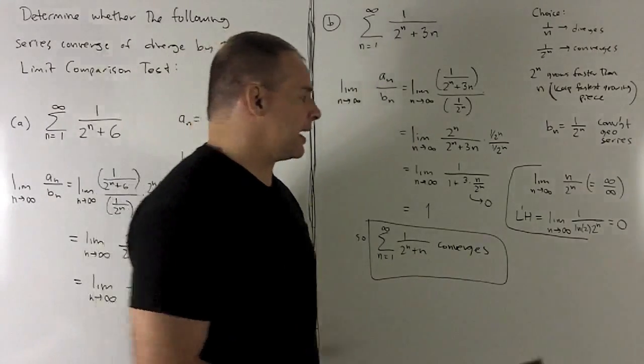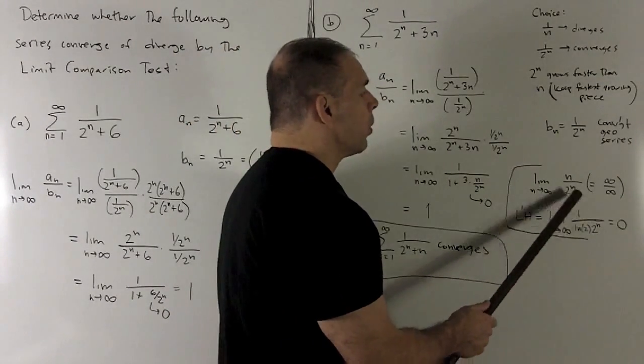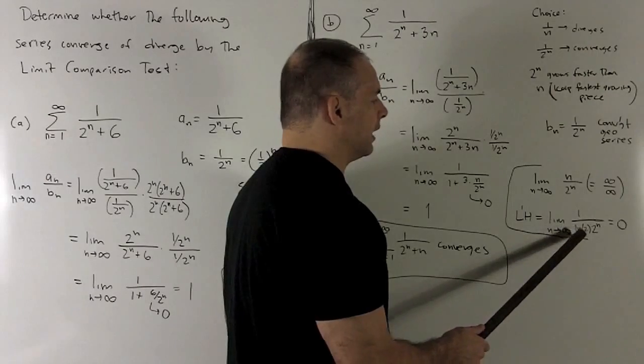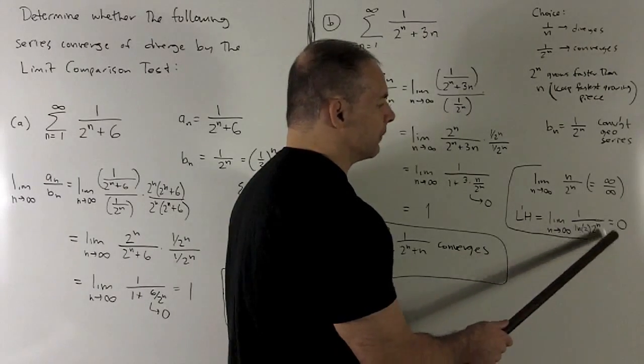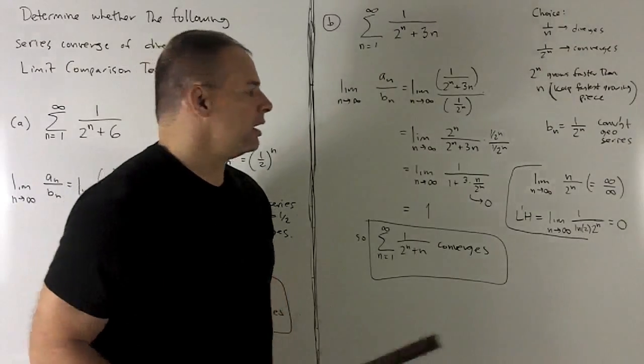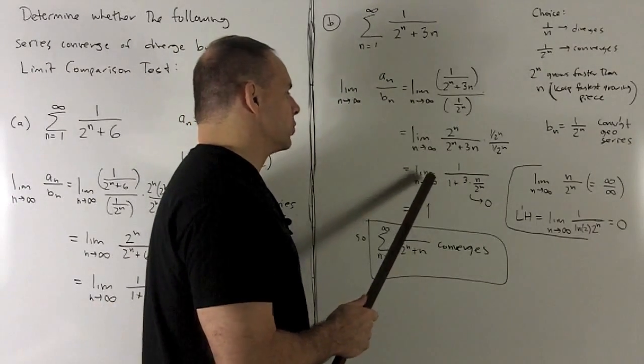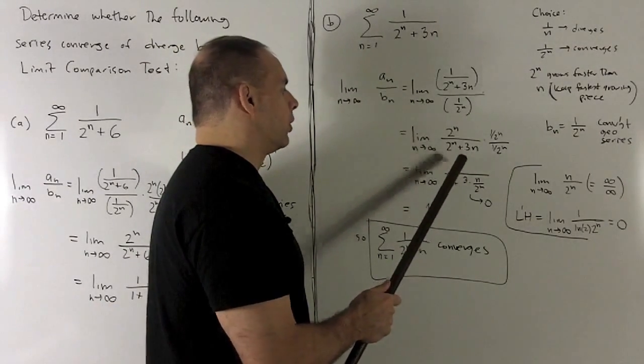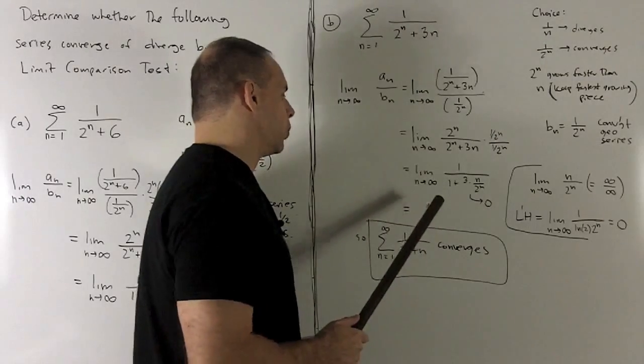That's a number, 1 over 2 to the n as n goes to infinity. Well, 2 to the n is going to go off to infinity also, so this is going to go to 0. All of that, just to say the limit as n goes to infinity of this thing is going to be 1 over 1 plus 0 or just 1.